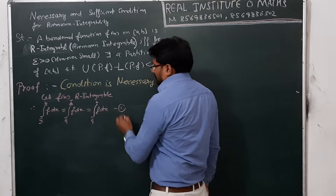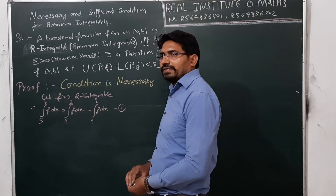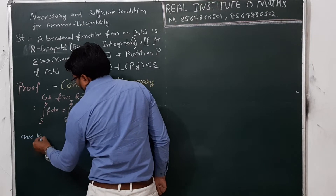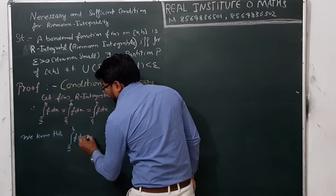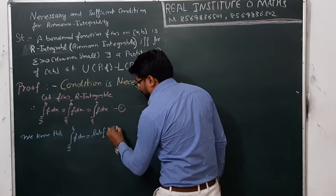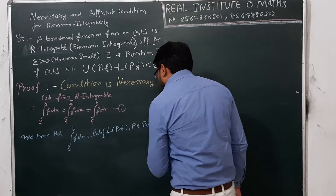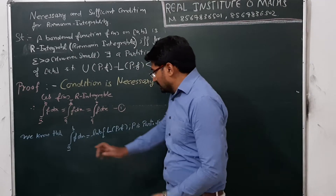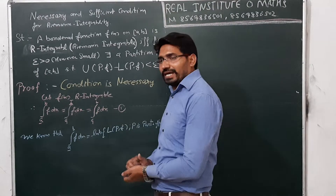Now, we know that the lower Riemann integral from A to B of F dx is equal to the least upper bound of L(P,F), where P is a partition of [A,B]. The lower Riemann integral is the least upper bound of the lower Riemann sums, meaning it is the supremum of all L(P,F).